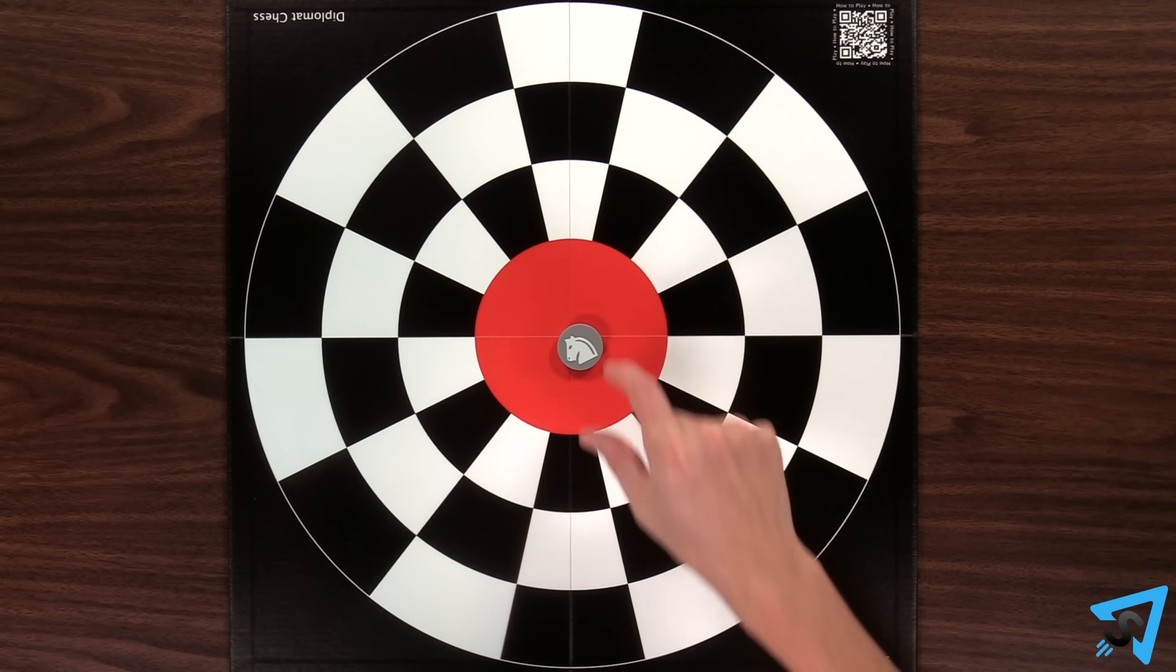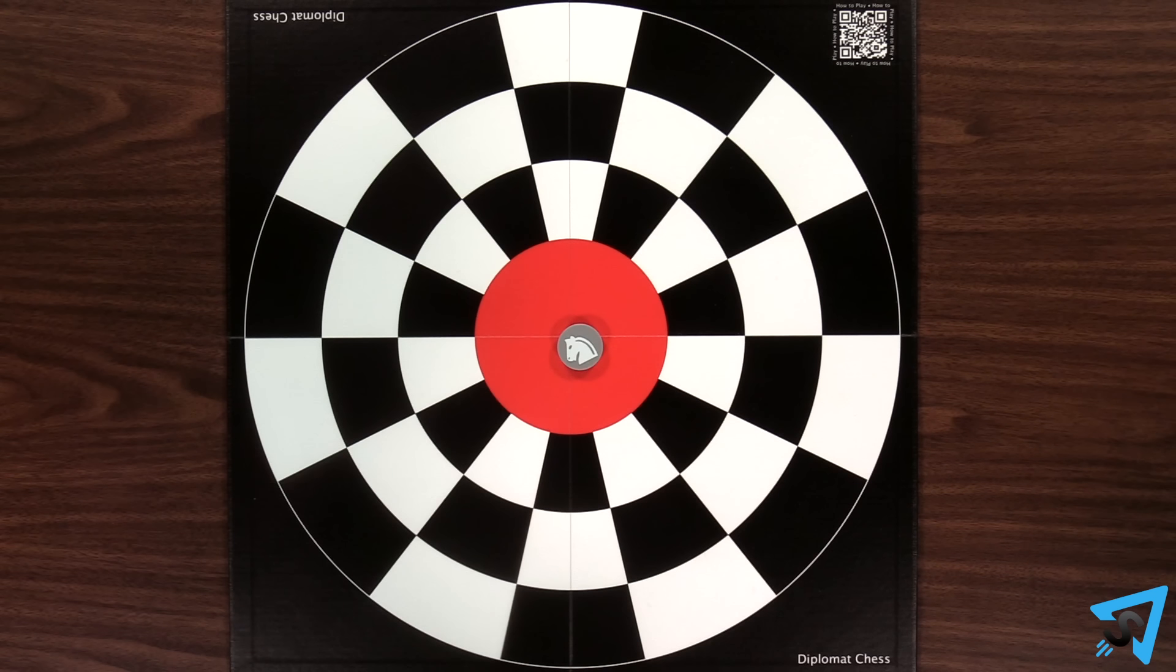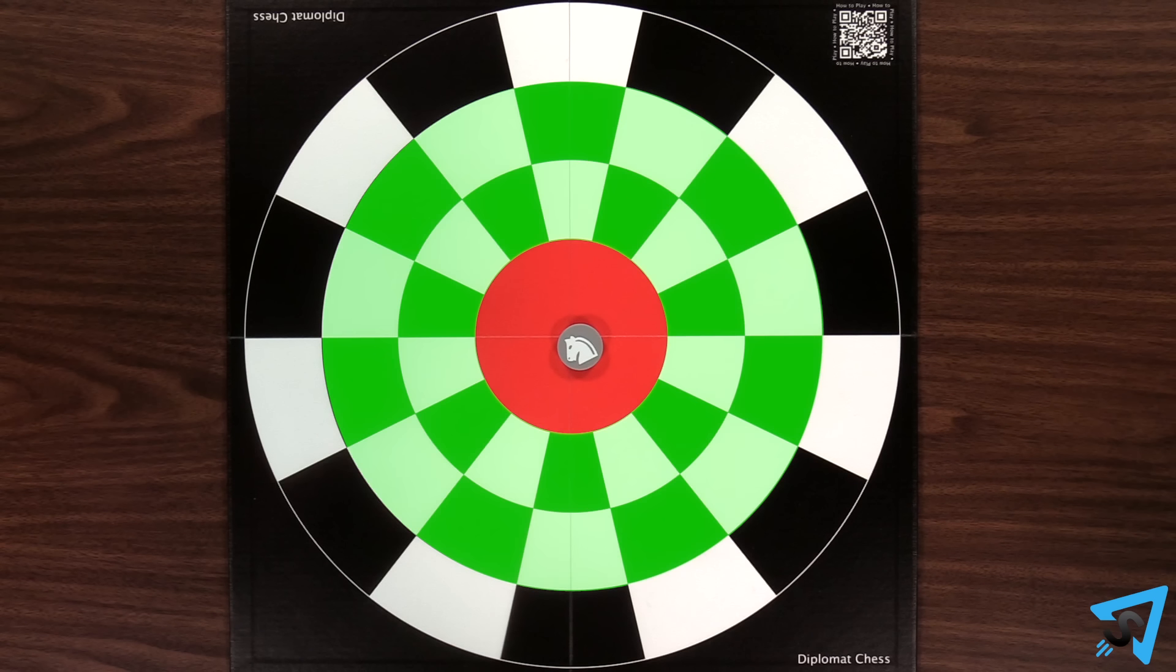If the horse is in the center, it may move to any of the spaces in the two inner rings.